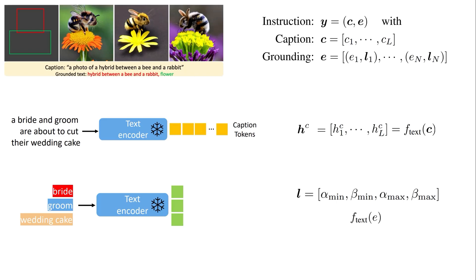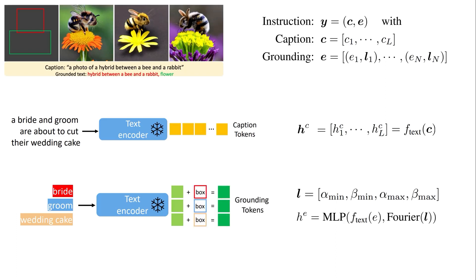One idea is to just concatenate these bounding box values with the text tokens from the CLIP text encoder. But the issue is that the text token embedding size is much larger compared to the bounding box tokens — for text we have a vector of size 768, but for the bounding box we have only four values. If we concatenate these four with the 768-dimensional vector, we might miss that information. So they use a Fourier embedding — originally proposed in a NeurIPS 2020 paper — which takes this four-dimensional vector and outputs a vector in a larger dimension. Concatenating the text vector and the Fourier-embedded bounding box vector, we pass it to an MLP to get the grounding tokens.